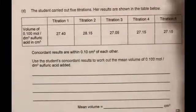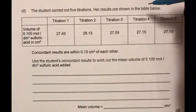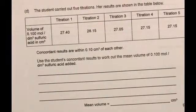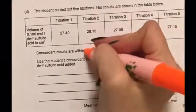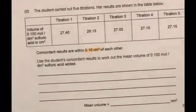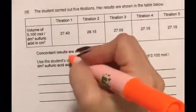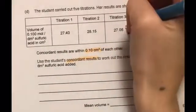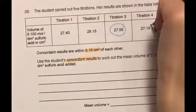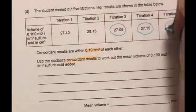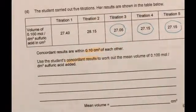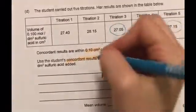So part D. The student carried out five titrations. Her results are shown in the table below. Concordant results are within 0.1 centimetres cubed of each other. Use the student's concordant results to work out the mean volume. Our concordant results are 27.05, 27.15 and 27.15. Titrations 1 and 2 are more than 0.1 away from any of those values.